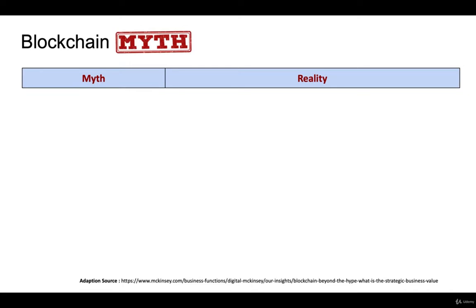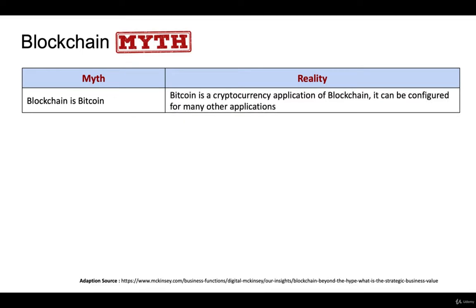The first myth: blockchain and bitcoin are the same thing. In reality, bitcoin is a cryptocurrency which is an application of blockchain, so blockchain can be configured for many other applications. The technology is blockchain, and bitcoin is built on top of it — bitcoin became very popular, and so the term blockchain picked up after that.